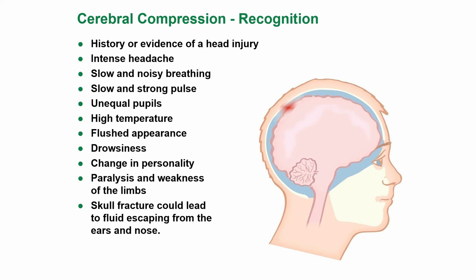Cerebral compression recognition: usually happens because of a head injury, so check for history or evidence of a head injury. Signs include intense headache, slow and noisy breathing, slow and strong pulse, unequal pupils, high temperature, flushed appearance, drowsiness, change in personality, paralysis and weakness in the limbs. A skull fracture could lead to fluid — cerebral spinal fluid — escaping from the ears and nose.